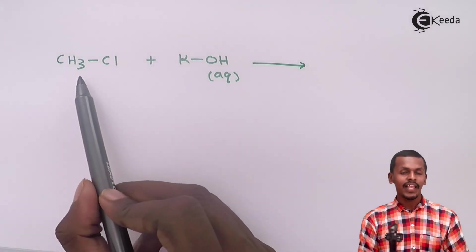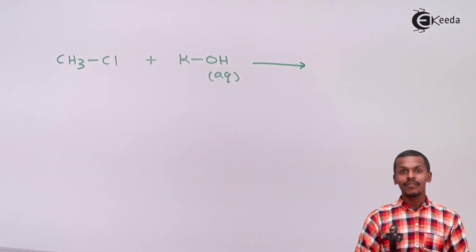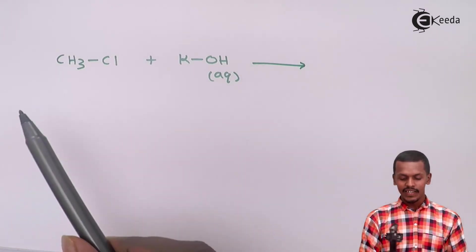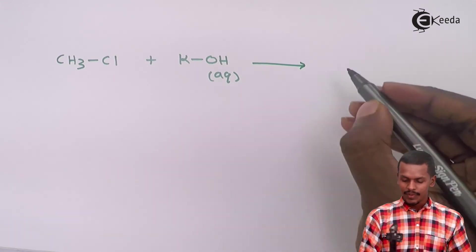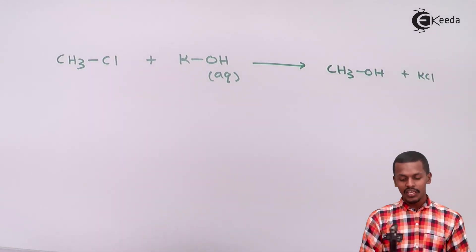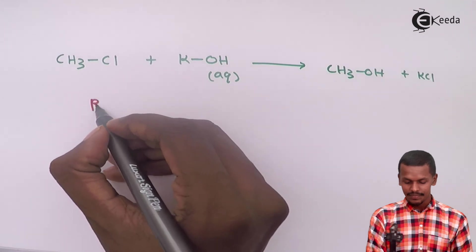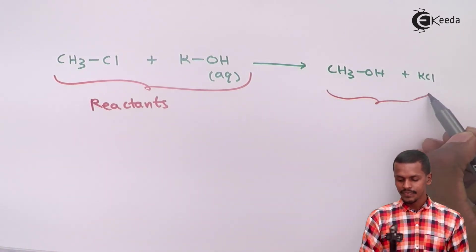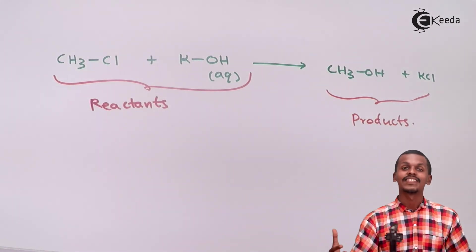So in this case, methyl chloride is present and potassium hydroxide is present. When you mix them, the arrow indicates they have reacted with each other to form a new substance — basically known as products. Therefore, we get CH3OH plus KCl. Because these two have interacted to form a stable product, CH3Cl and KOH are known as reactants, and CH3OH and KCl are the new products formed.